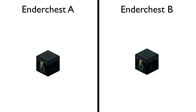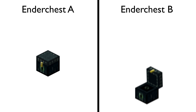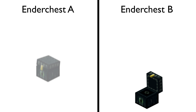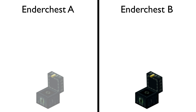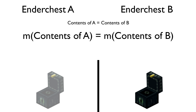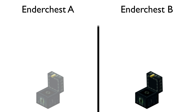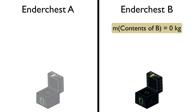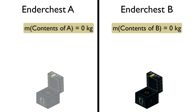So what of ender chest A? Ender chest A is massless, because it's been made massless by the eye of ender of ender chest B. But what of its contents? The mass of ender chest A's contents are the same as the mass of ender chest B's contents. Since the contents of ender chest B have zero kilograms of mass, then the contents of ender chest A also has zero kilograms of mass.